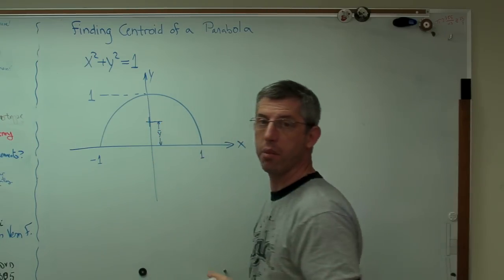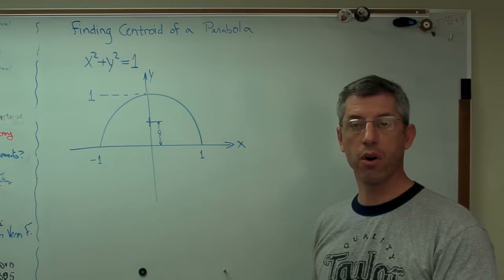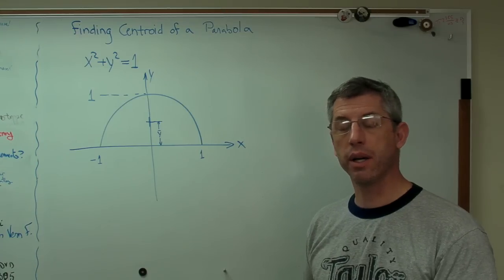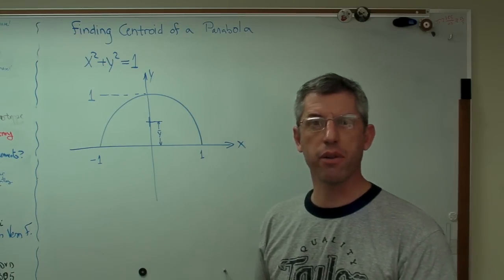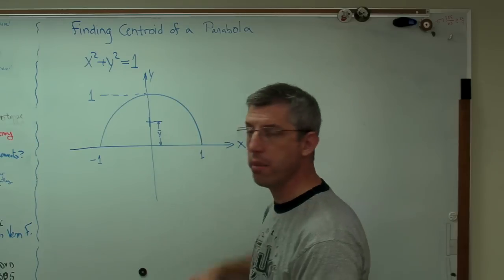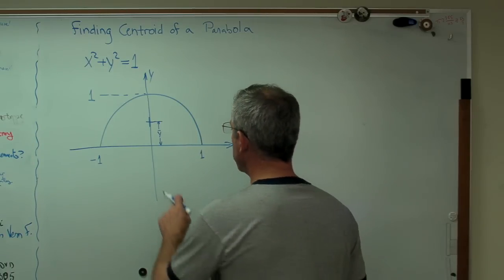I'm going to call that y-bar. Anytime you have a bar over a variable, that designates an average. And centroid is kind of an average. It's like an average of areas. So we'll use y-bar to designate that.